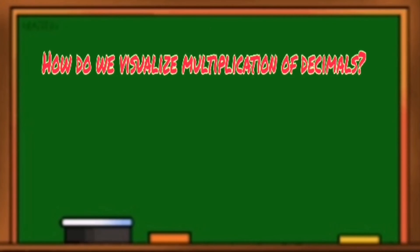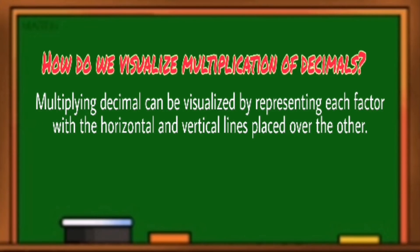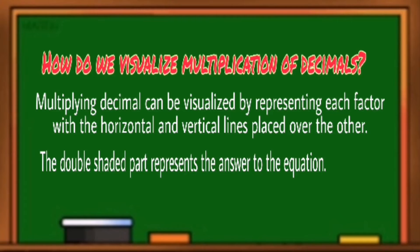So do you know already how to visualize multiplication of decimals? Multiplying decimals can be visualized by representing each factor with horizontal and vertical lines placed over the other. The double shaded part represents the answer to the equation.